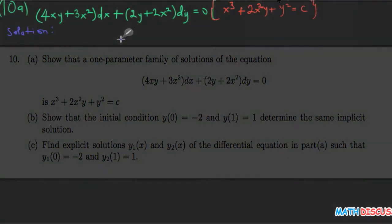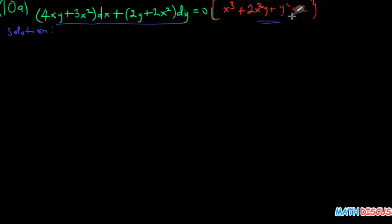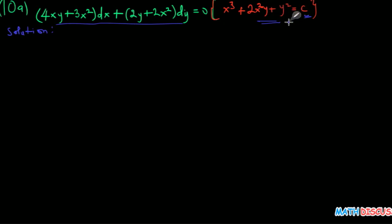For question 10, you are told to show that the general solution of this differential equation is actually this. The question says show that a one-parameter solution — one parameter simply means that your solution contains just a single arbitrary constant, which serves as a parameter for the general solution.